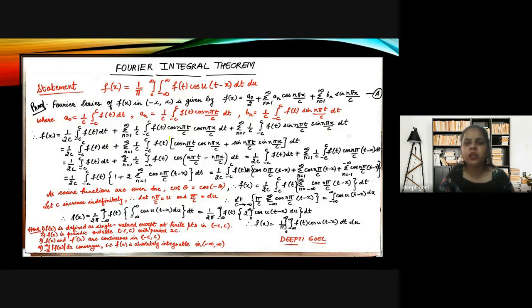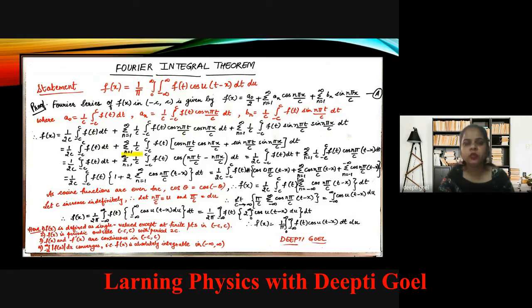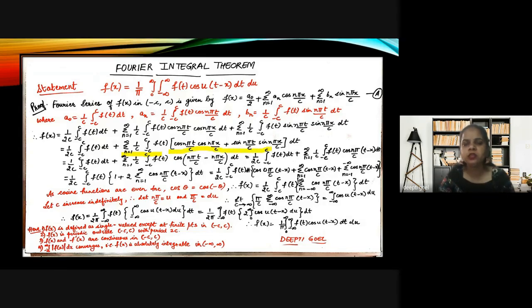We club the second and third terms together, taking out common factors. We find that summation n=1 to infinity of (1/c) integral from minus c to c of f(t) dt is common in both terms. In the bracket we are left with cos(nπt/c)cos(nπx/c) plus sin(nπt/c)sin(nπx/c). We readily recognize this as the formula cos C cos D + sin C sin D = cos(C − D), so the bracketed term is written as cos(nπt/c − nπx/c).